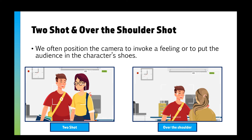Some other shots we might have include a two-shot — we can use a two-shot to show a couple together, maybe to create some form of romantic feeling. Or you might have an over-the-shoulder shot, where you're trying to put the audience into the character's shoes, so they almost feel like they're a part of that conversation as a third party.